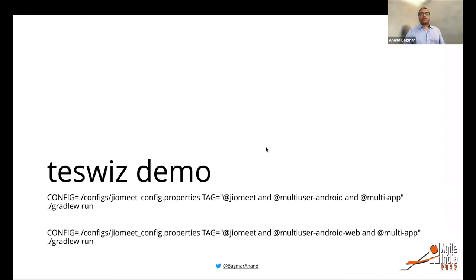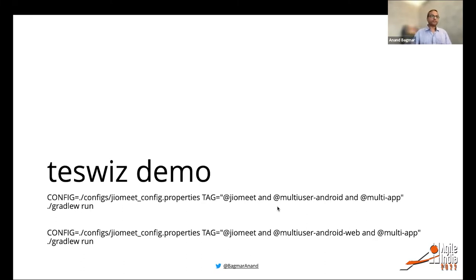All the code is run from the command line using simple properties provided as environment variables or directly at the command line — TestVis takes these and runs without any code changes. Just running the test isn't sufficient though; we also need to see what happened — what reports are generated and what value can be extracted — because knowing the status and what to do next is the important aspect.